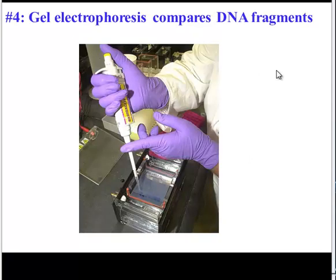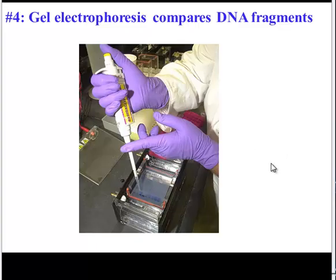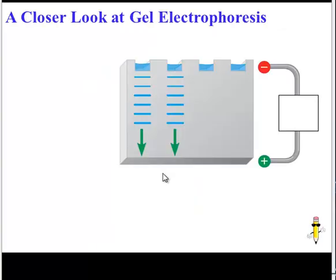So once we have a lot of DNA fragments, we can then compare their size using equipment called gel electrophoresis. This equipment will compare the sizes of the DNA fragments. Keep in mind that this equipment can also be used to compare proteins.